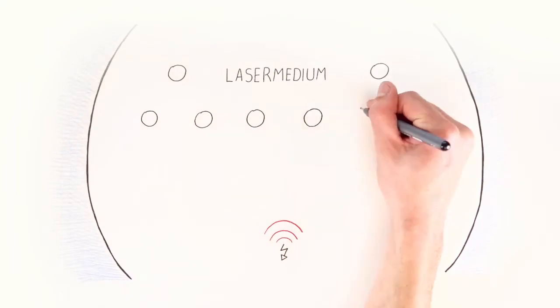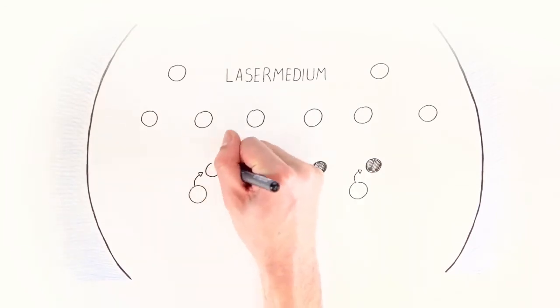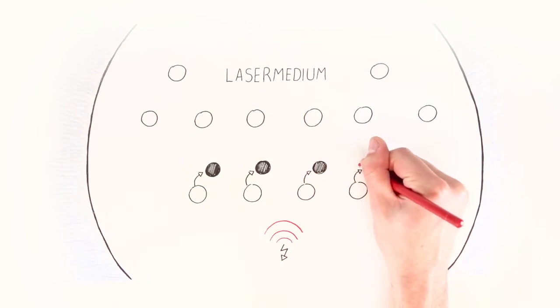The laser medium consists of particles that are in their basic state. The pump feeds energy into the particles, and they rise to a higher energy level. If any of these particles then falls back into their basic state, energy is released in the form of a photon, also called Light Quantum.